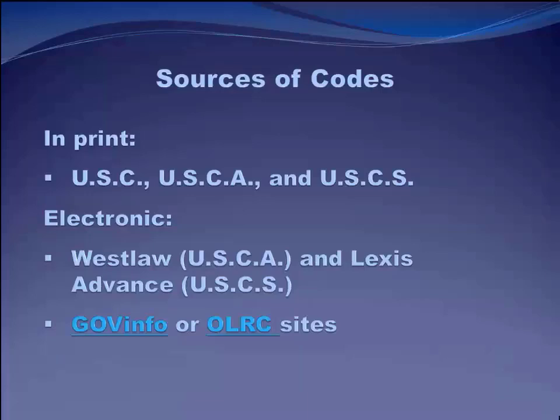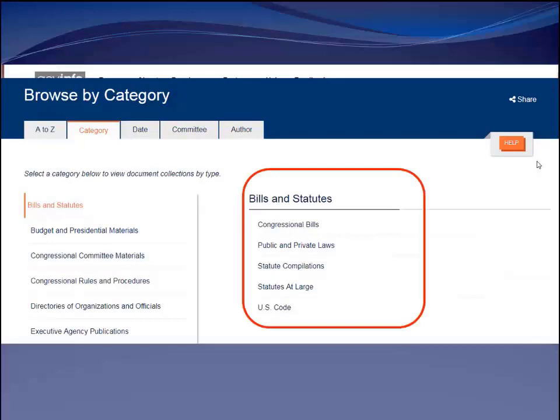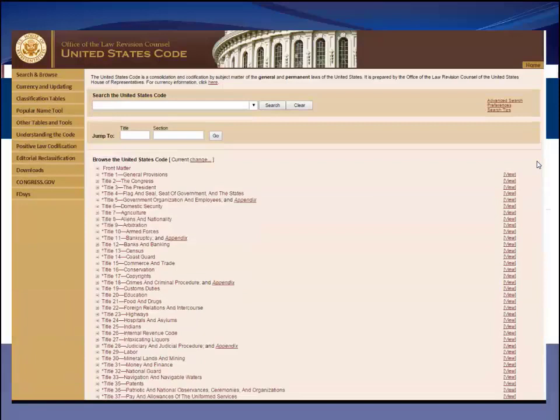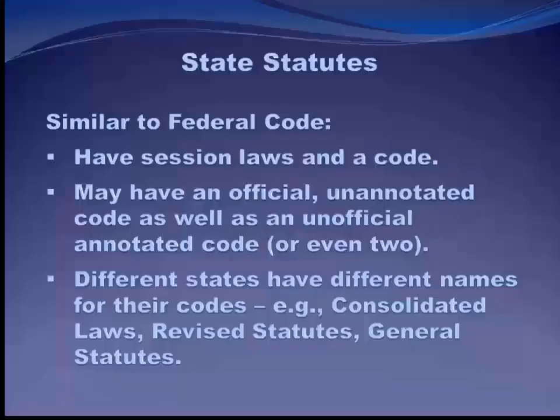Where do we find code? In print: the U.S. Code, United States Code Annotated, or United States Code Service. Electronically: Westlaw for the USCA, Lexis for the United States Code Service. You can also get the U.S. Code from GovInfo — the federal government's legal research portal — or the Office of Law Revision Counsel website. Both are free and authoritative, though they don't have the annotations that USCA and USCS have. On GovInfo you can browse by category and access bills, public and private laws, the Statutes at Large, or the U.S. Code.